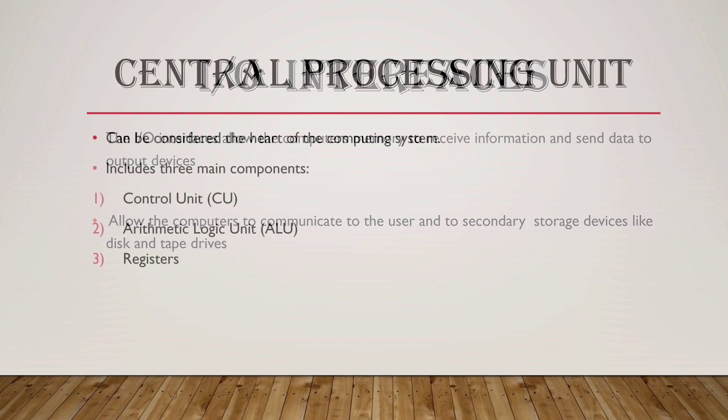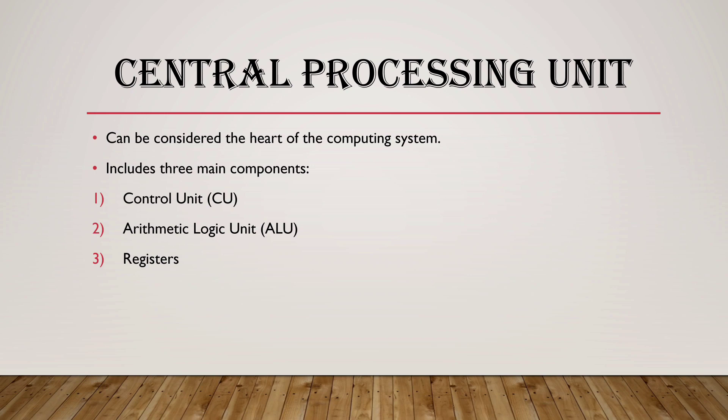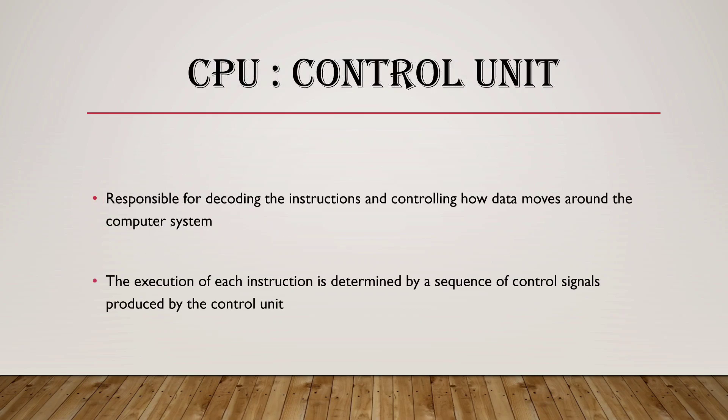The Central Processing Unit can be considered the heart of the computing system. It includes mainly three components: the Control Unit, the Arithmetic Logic Unit, and Registers. The Control Unit is responsible for decoding instructions and controlling how data moves around the computer system. The execution of each instruction is determined by a sequence of control signals produced by the Control Unit.